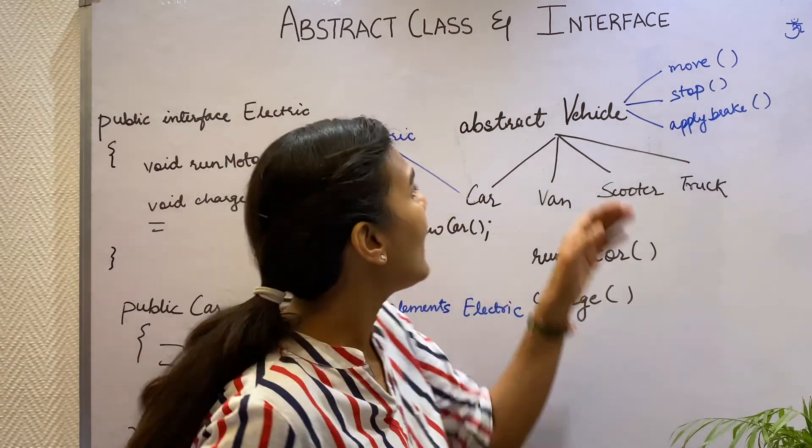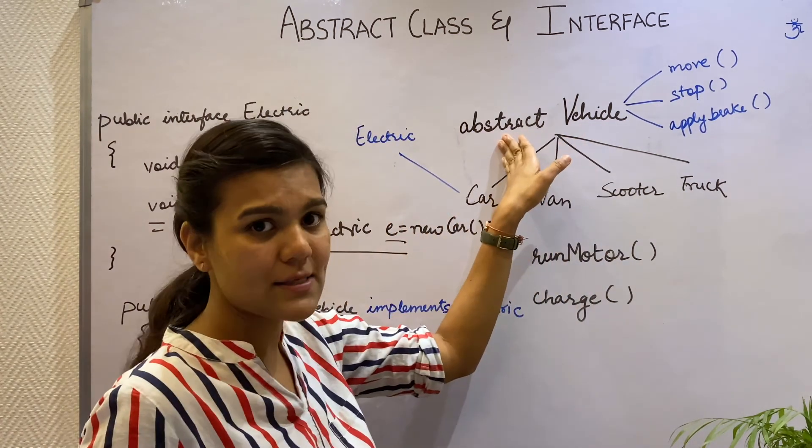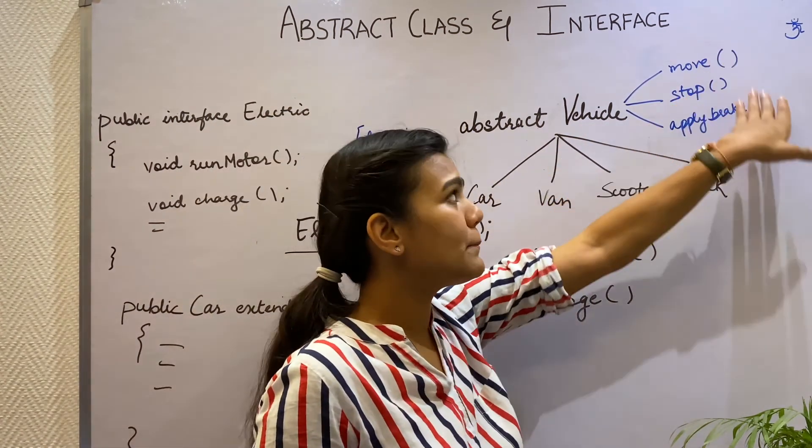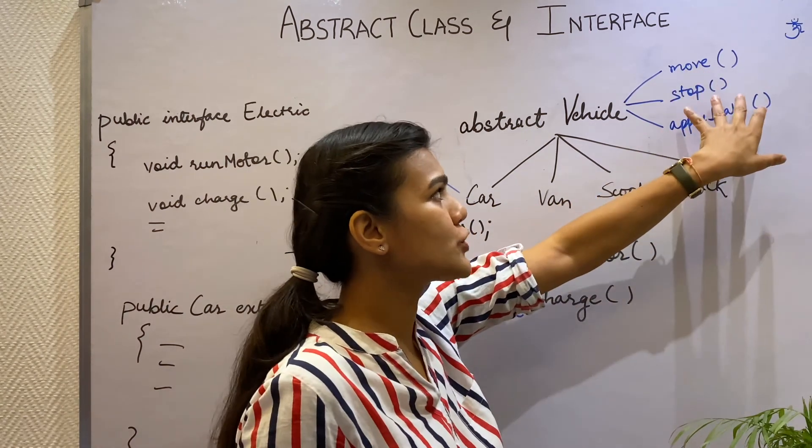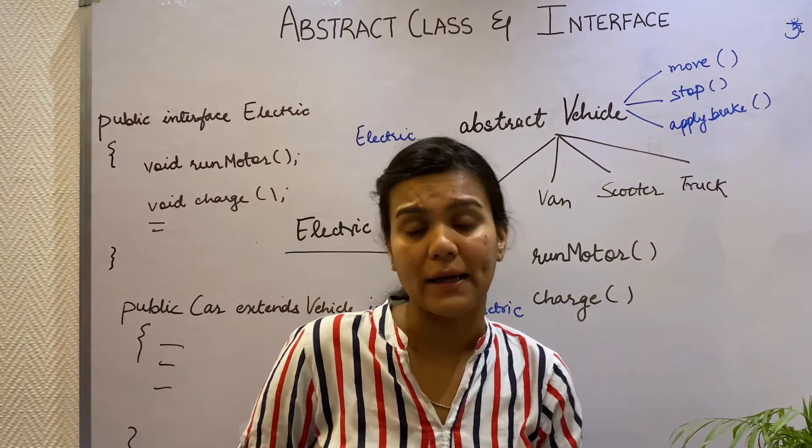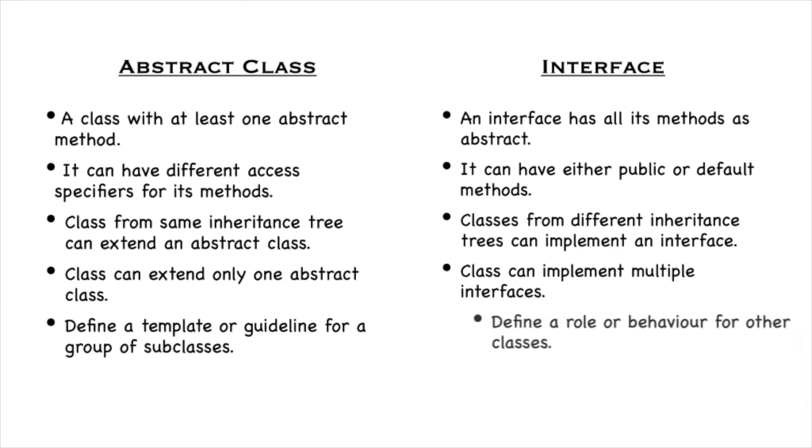A class that is an abstract class defines a template or a guideline for a group of subclasses. For example, a Vehicle class as an abstract class defines a template like all the vehicles will have to move, stop, apply break.